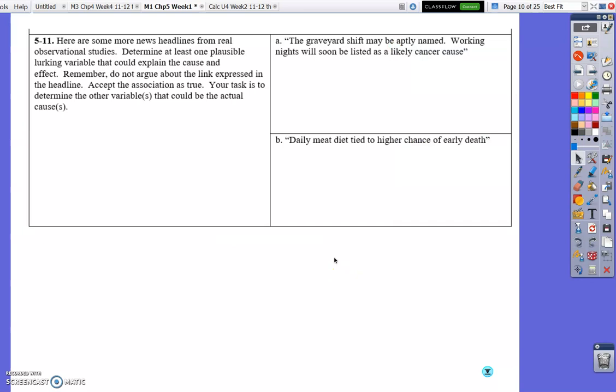And that one's a little tough. Come, use your best imagination on that. Daily meat diet tied to a higher chance of early death. It's probably a cholesterol thing, a fat intake, a lack of varied diet in your ground. Specifically, greens and vegetables. Eating meat all the time is not really good for you. That kind of thing is here. Doesn't mean it will cause death, but it's the idea. So, that's that. Come up with a lurking variable. Use your best judgment. And I will see you guys later.